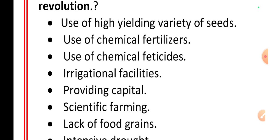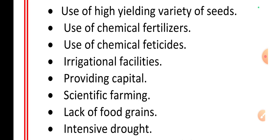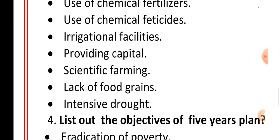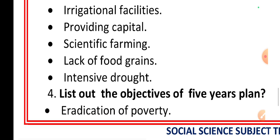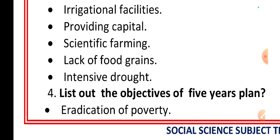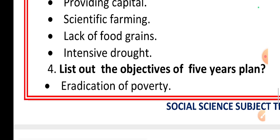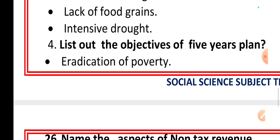What are the factors that led to the Green Revolution? Use of high yielding variety of seeds. Use of chemical fertilizers. Use of insecticides and pesticides. Irrigational facilities. Providing capital. Scientific farming. To avoid lack of food grains. To avoid intensive drought.